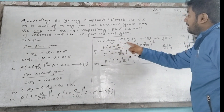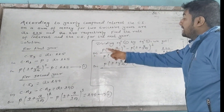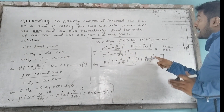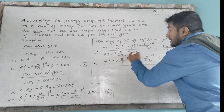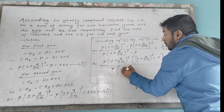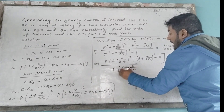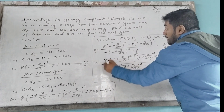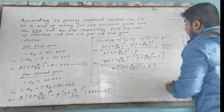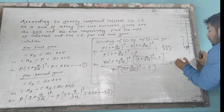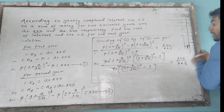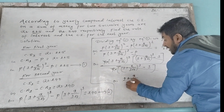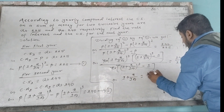Taking the formula: P times (1 + r/100) to the power 1, and then P times (1 + r/100) squared divided by P times (1 + r/100) to the power 1. Taking P common, we get (1 + r/100) power 1 minus 1. After cancellation, 240 divided by 225 equals (1 + r/100).